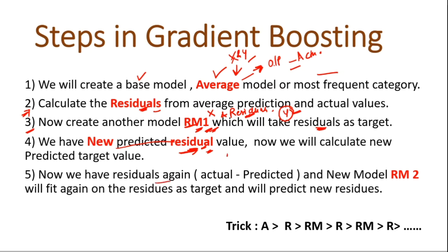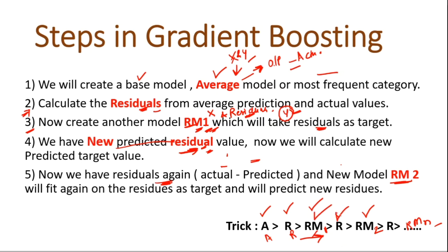Once we have the new residuals, we calculate residuals again (actual minus predicted) and create a new model RM2. The pattern is: average model → calculate residuals → RM1 → calculate residuals → RM2 → calculate residuals → RM3, and so on. This continues until we reach the configured number of estimators or residuals reach zero.